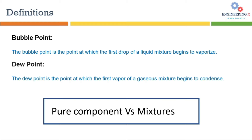But this is not true for mixtures. Mixtures have different bubble point and dew point because they have different vapor phase and liquid phase compositions at a given temperature and pressure. When a mixture starts to boil, the vapor phase will be rich in components with low boiling temperatures. On the other hand, the liquid phase will be rich in components with high boiling temperatures. These concepts can be further explained via a phase diagram.